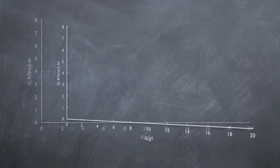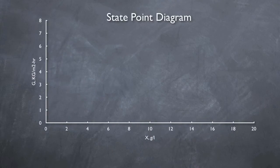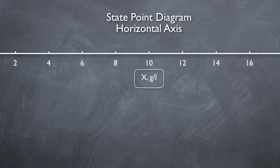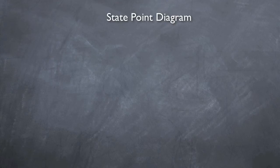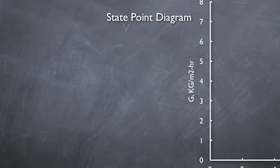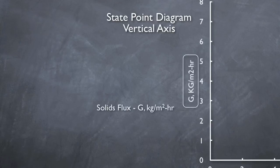Let's go through what the state point diagram is and what it represents. The state point diagram consists of a horizontal axis which represents the solids concentration, x, measured in grams per liter. The vertical axis represents the solids flux, G, measured in kilograms per meter squared hour.